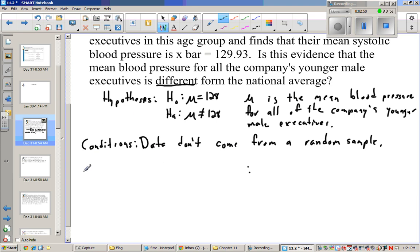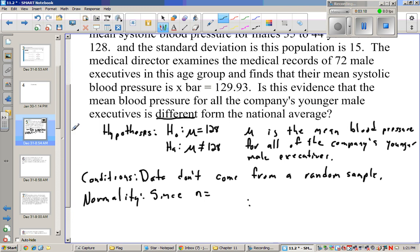Then we have to check normality. Normality will be pretty easy since n is greater than 30. So in this case, n = 72, which is greater than 30. Central limit theorem tells us that the sampling distribution is approximately normal.